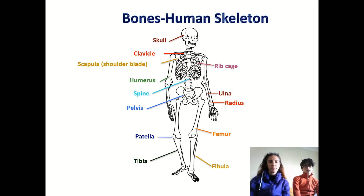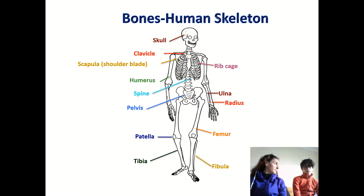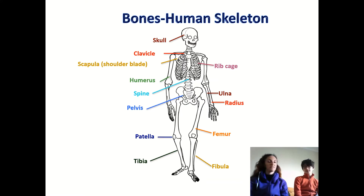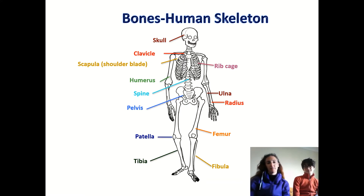Here we have a diagram of your skeleton and you can see you have bones everywhere in your body. And Graham, can you tell me what the longest bone in your body is? Your femur in your upper leg. That's exactly right — your femur in your upper leg. That's the biggest bone in your body.